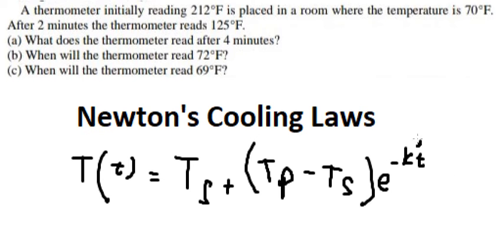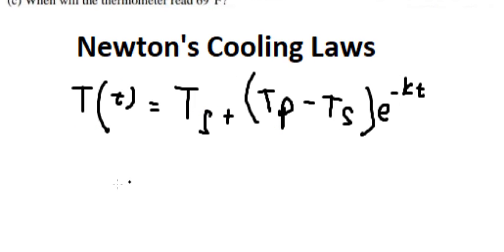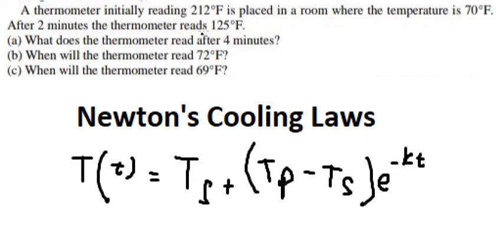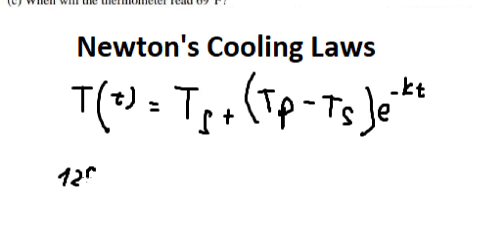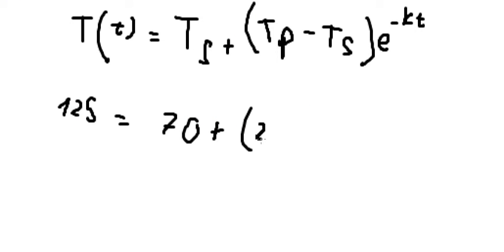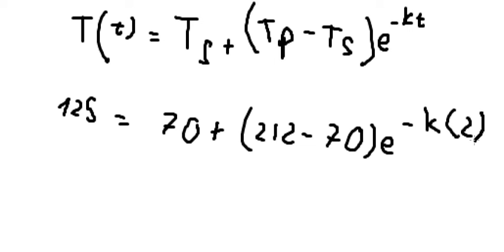Now we can put all the value in here to find the small k. So after two minutes we have 125 equals T_H, that's about 70, plus 212 minus 70, e to the power of negative K multiplied by number 2.